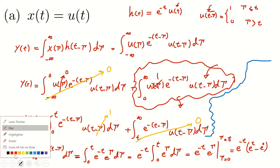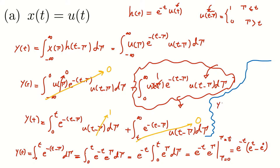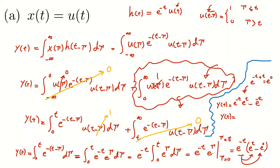So y(t) equals e^(-t) times e^t minus e^(-t) times e^0, which is 1. Multiplying e^(-t) by e^t gives e^(-t+t) = e^0 = 1. So the result is 1 minus e^(-t).